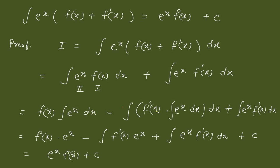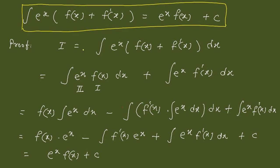Suppose we have to integrate a special kind of integrand. This is a special result we apply in this kind of integrand. Whenever you see the integrand of the form e^x[f(x) + f'(x)], the answer is simply e^x·f(x) + C. You have to recognize and identify f(x) and its derivative, and both should appear as a sum multiplied with e^x.